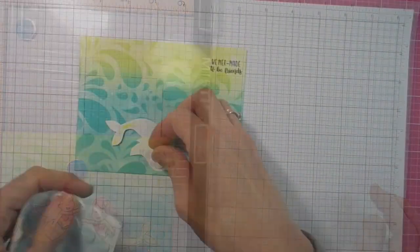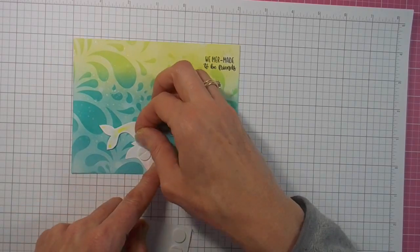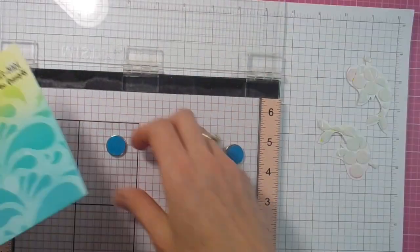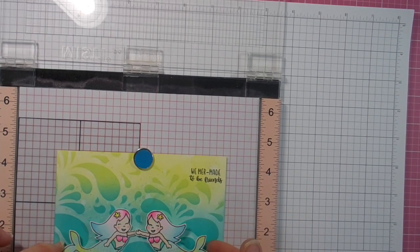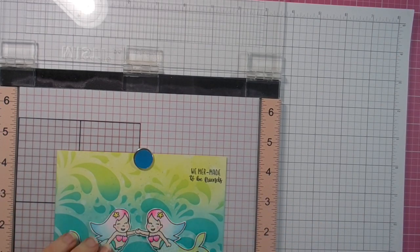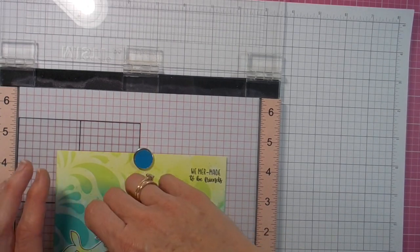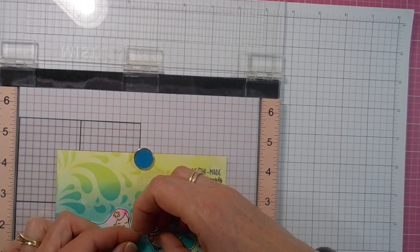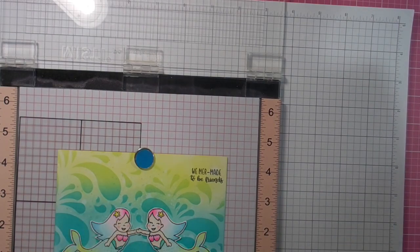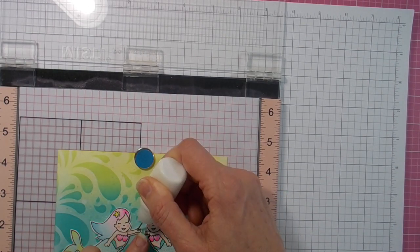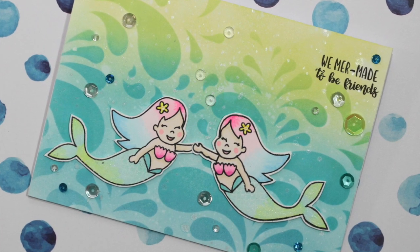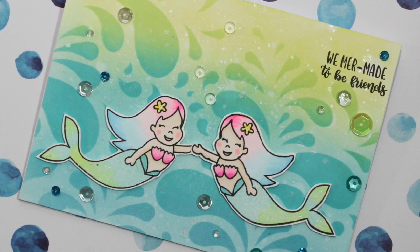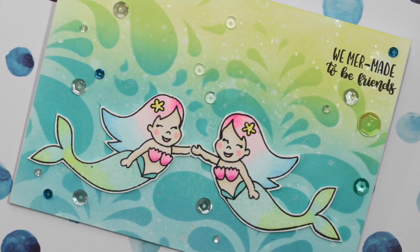And with some foam adhesive, I'm adding my little mermaids. I've taken off the backing of the foam there, holding the card still in my mini MISTI and laying the little mermaids down, just hovering above the card until I have them exactly in the right spot, sticking their little hands together. And some pretty sequins from Mudra, and my card is complete.